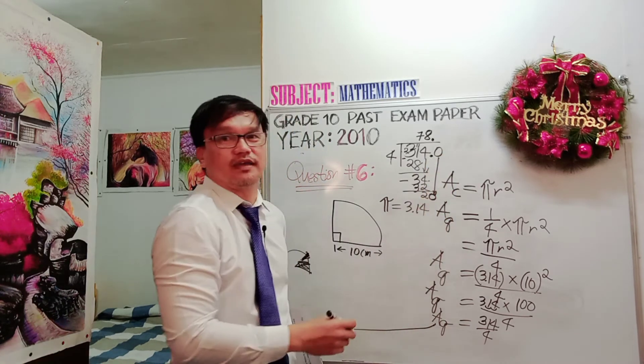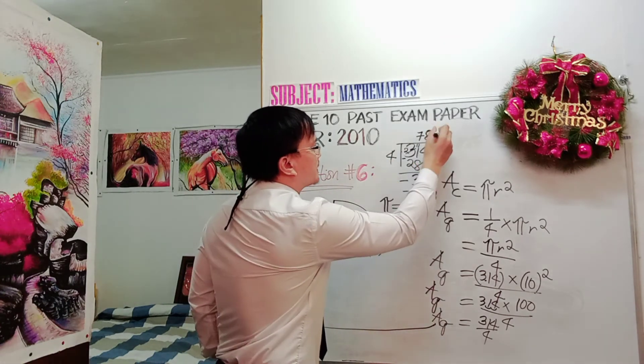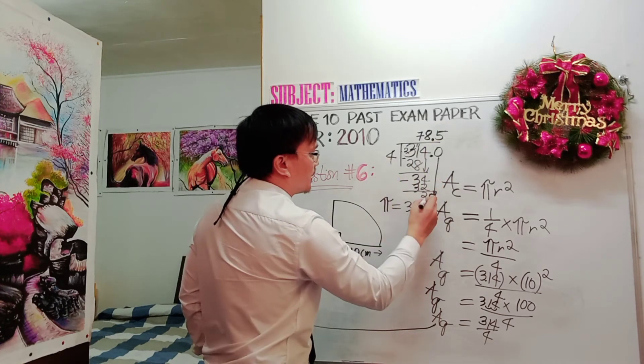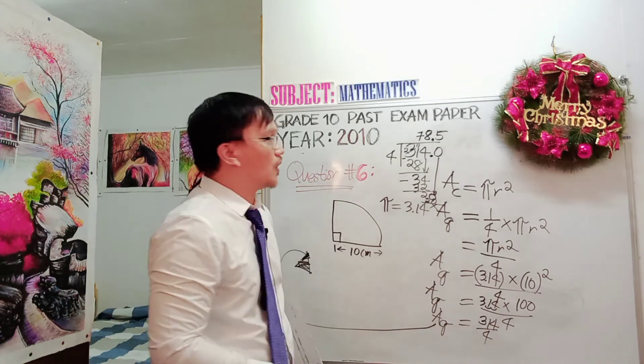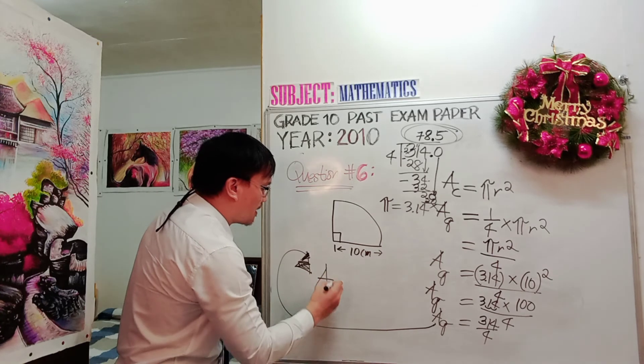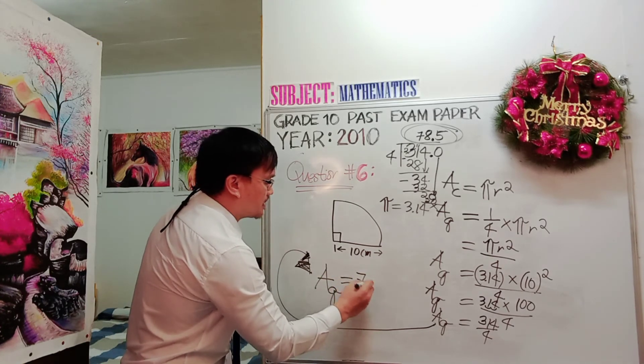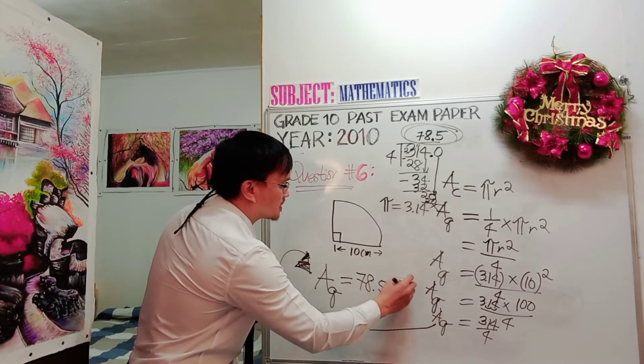Now you have 20. 20 divided by 4 is 5. 5 times 4 is 20. And remainder now is 0. Therefore, the area of the quadrant is equal to 78.5 square centimeter.